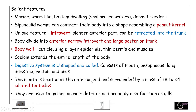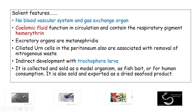The mouth is located at the anterior end and is surrounded by a mass of ciliated tentacles. The ciliated tentacles are used to gather organic detritus and probably also function as gills. There is no vascular system and no organ for gaseous exchange. The coelomic fluid helps in circulation and contains the circulatory pigment called haemerythrin. The excretory organ is metanephridia.